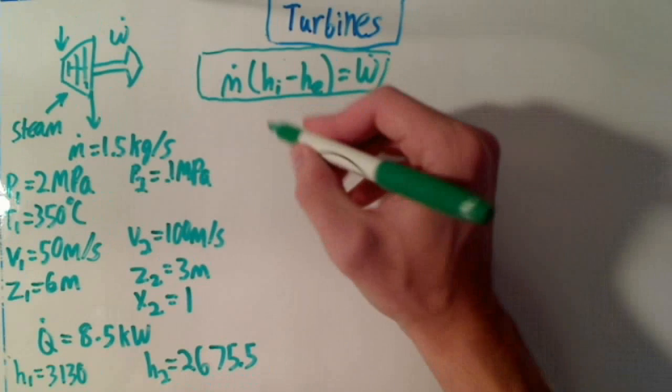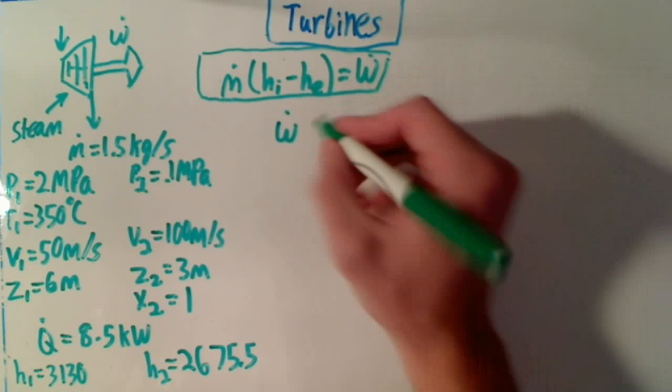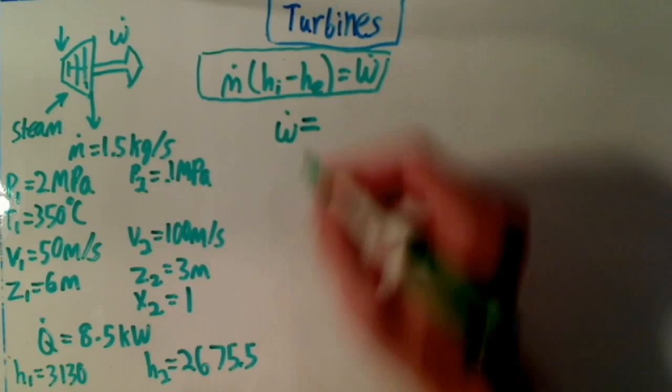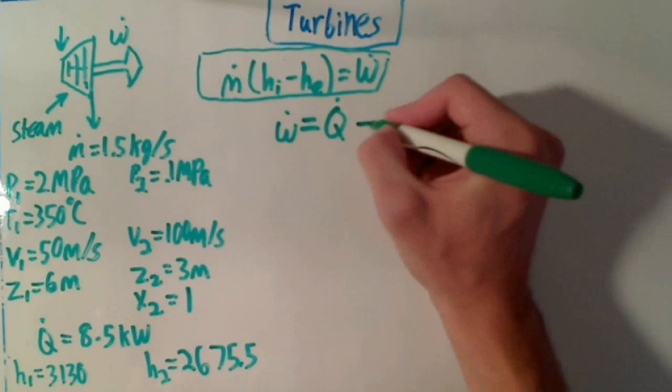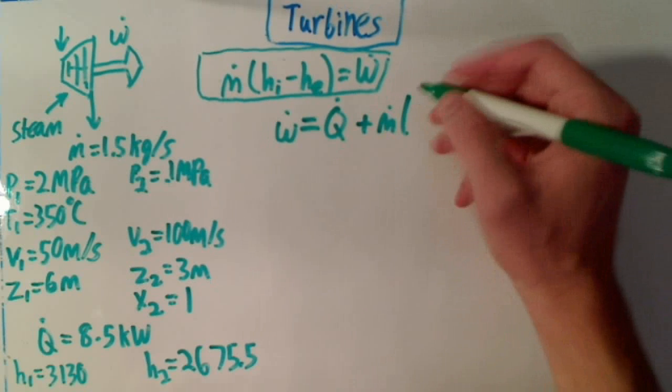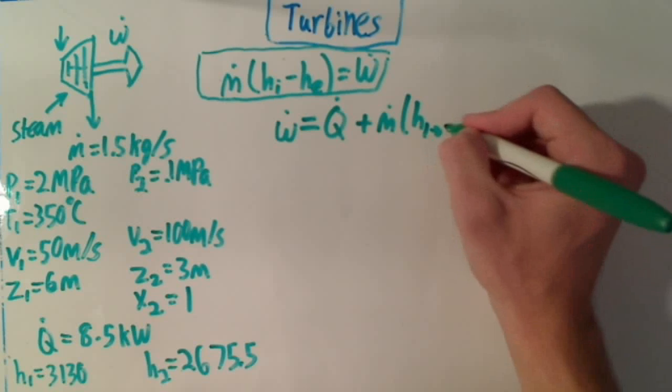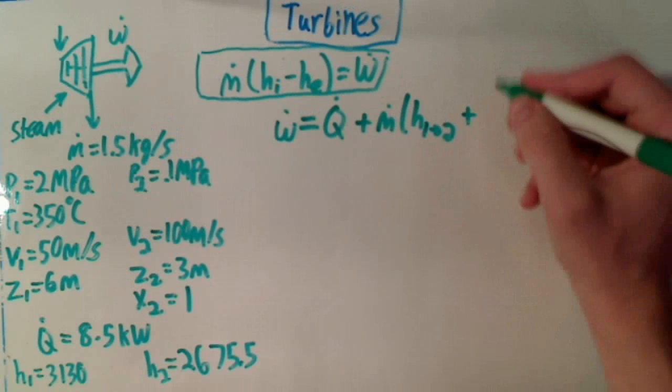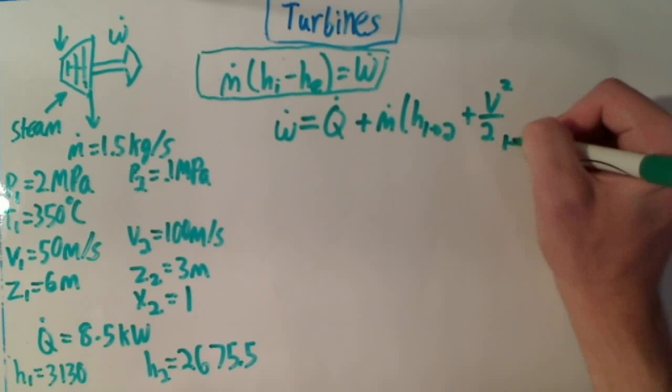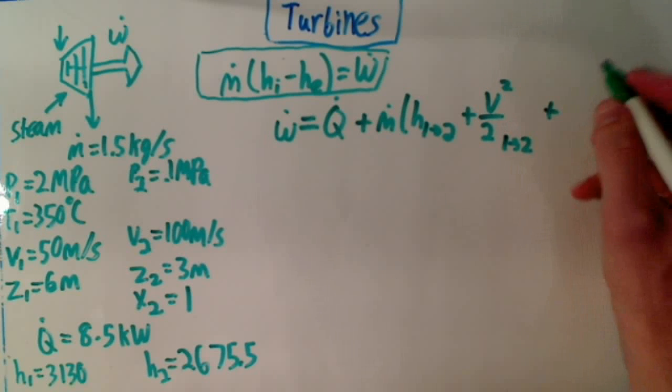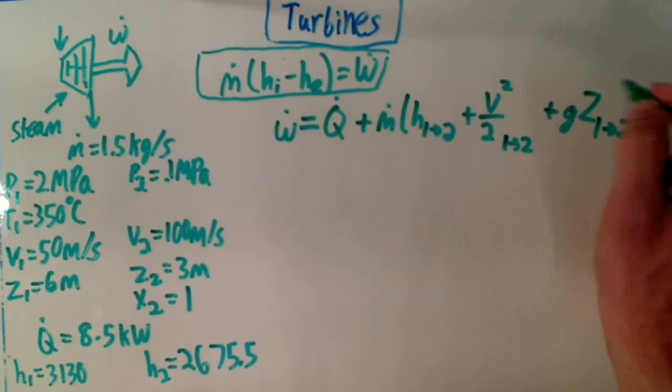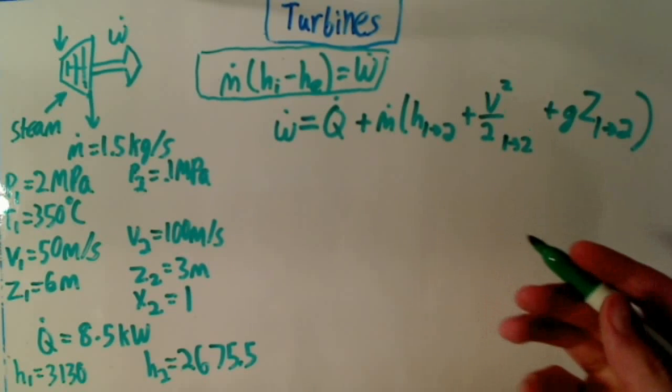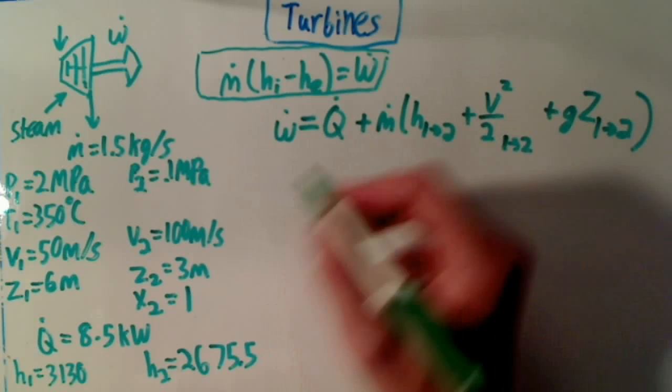If we were to write out the equation and solve it for work, we would have work equals the heat transfer plus the mass flow rate times the change in enthalpy from state 1 to state 2, plus the change in velocity squared from state 1 to 2, plus the change in g times z from state 1 to state 2. And we do all this out, and we can figure out what work is. So let's do it piece by piece.